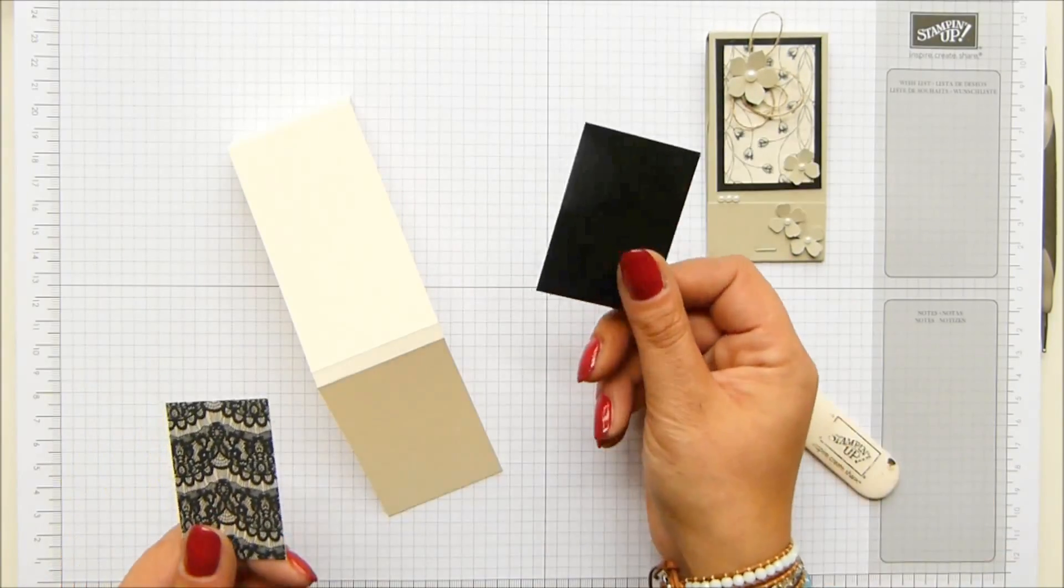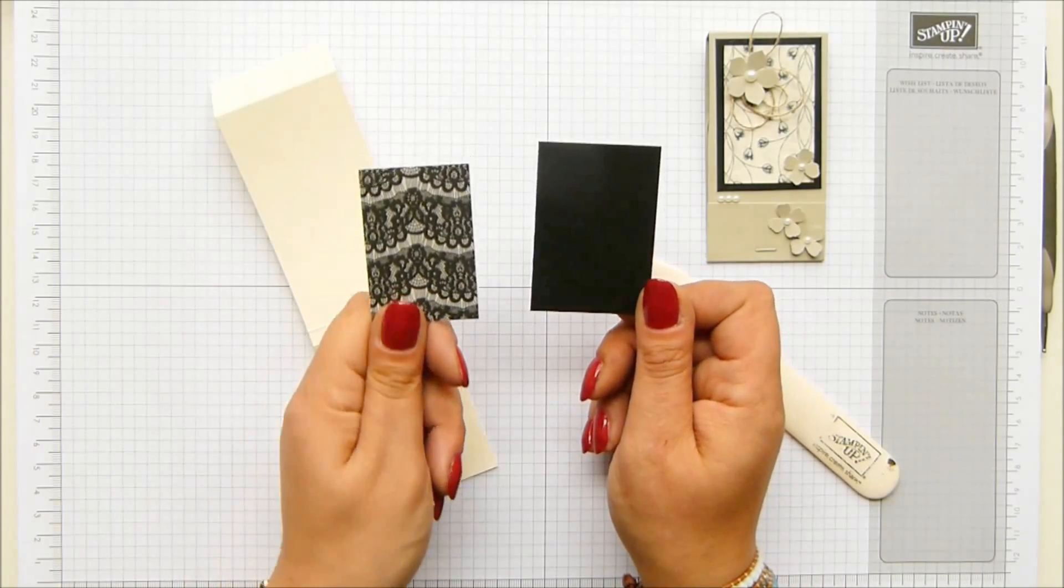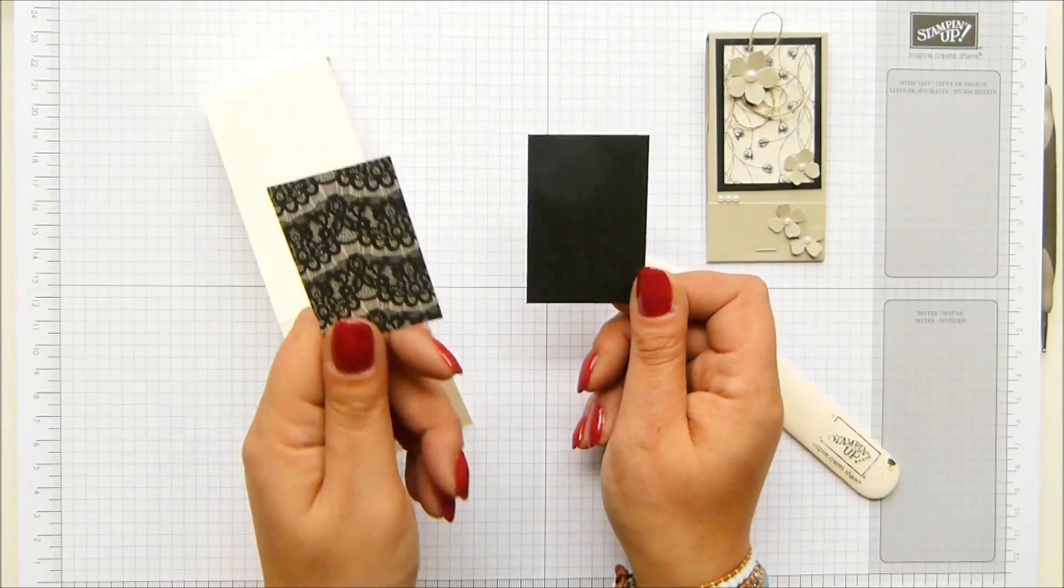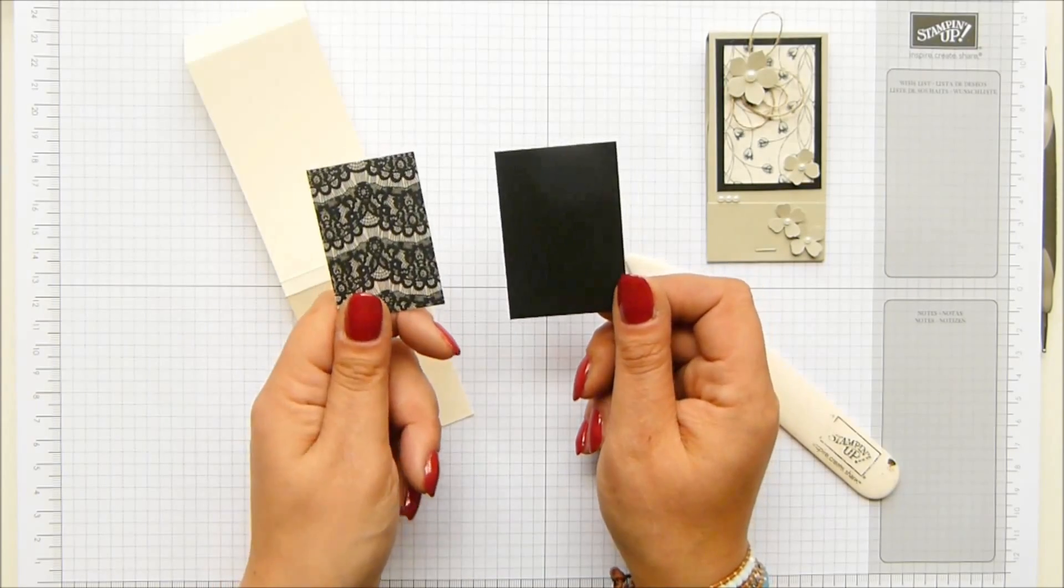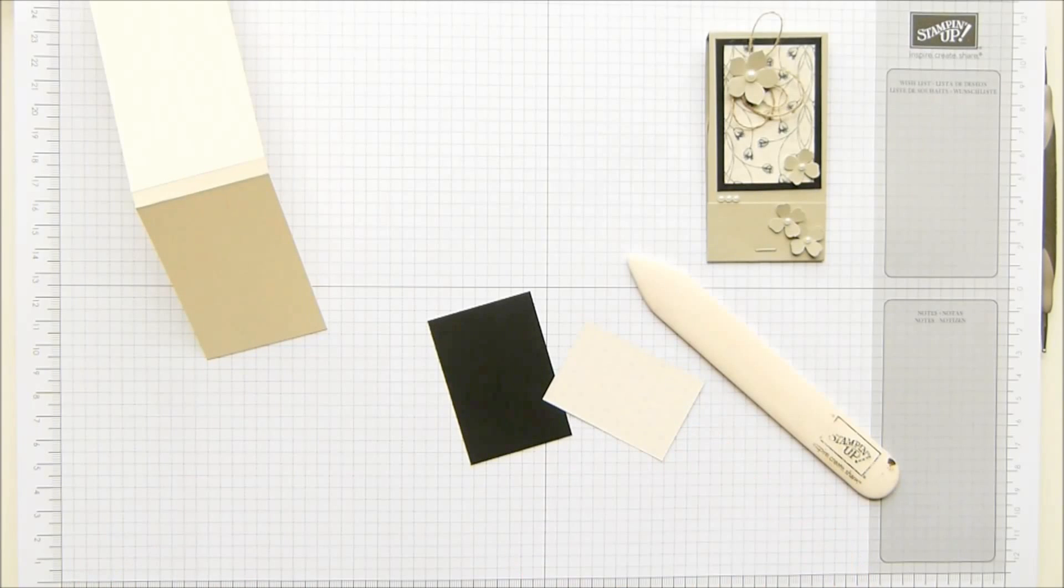These measures, this one is two and a half by one and three quarter inches, which is six and a half by four and a half centimeters. And then the DSP panel, it's just slightly smaller, two and a quarter inches by one and a half or six by four. And they just nest over the top. So I'm going to stick that bit down first.